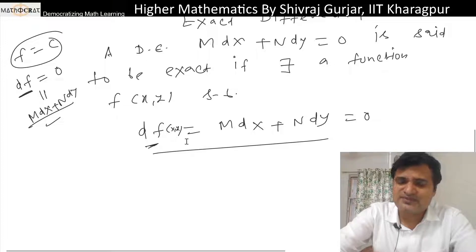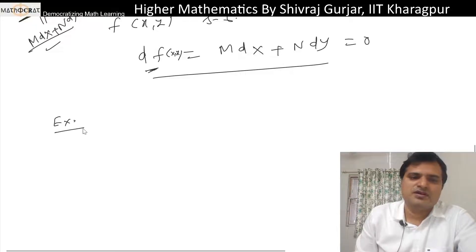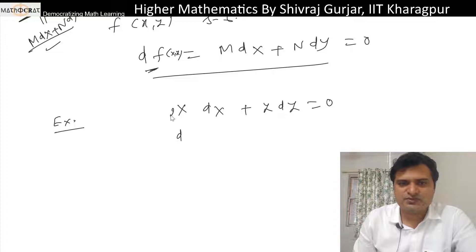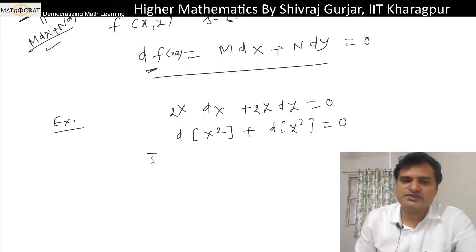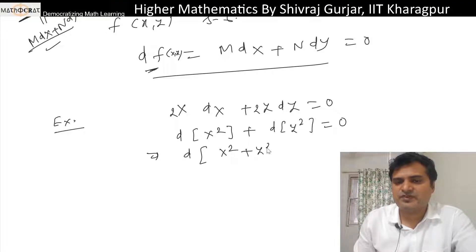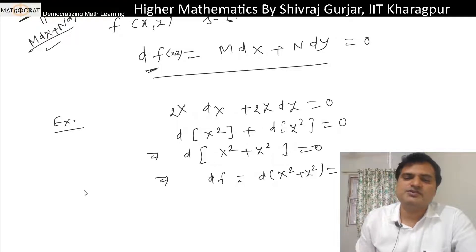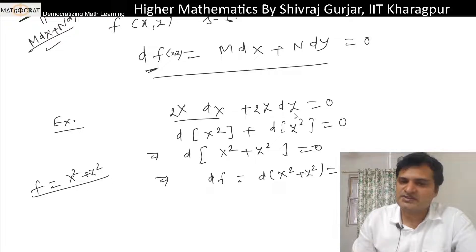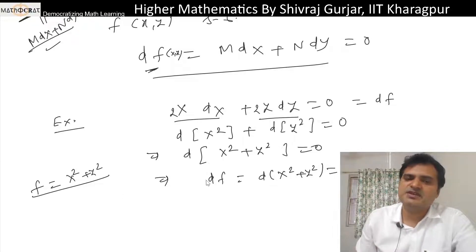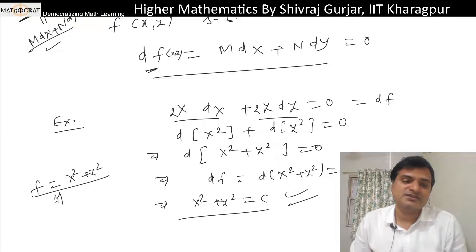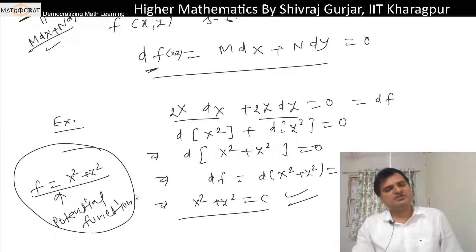For example, x dx + y dy = 0 is a differential equation. We can write x dx as d(x²/2) and y dy as d(y²/2), so we can club it as d(x² + y²) = 0. Basically it is of the form df = 0 where f = x² + y². So the solution is x² + y² = c. This f is also known as the potential function. Every exact differential equation has a potential function and is very easy to solve.